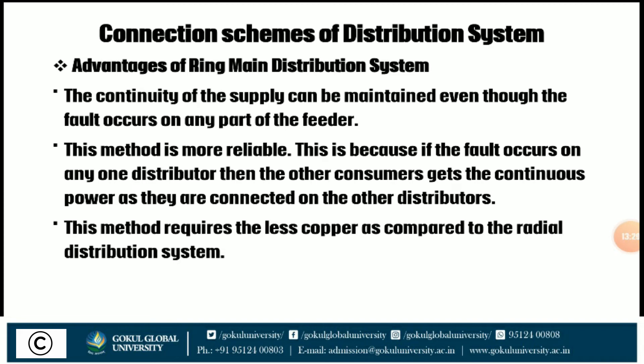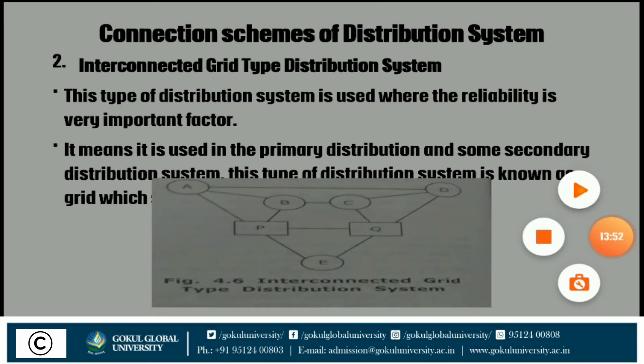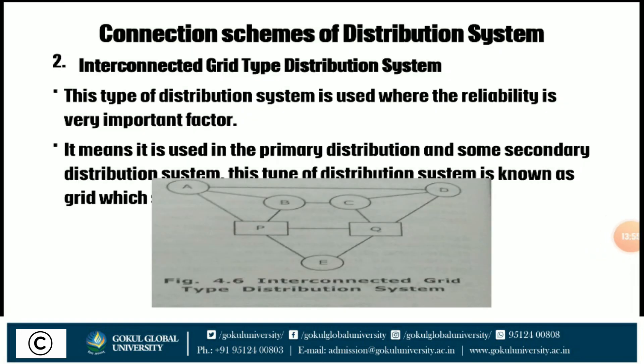Advantages of the ring main distribution system: continuity of supply can be maintained even if a fault occurs on any point of the feeder; this method is more reliable because if a fault occurs on one distributor, other consumers get continuous power from other distributors; and this method requires less copper compared to the radial distribution system. Third is the interconnected grid type distribution system, which is used where reliability is a very important factor — used for primary and some secondary distribution systems.